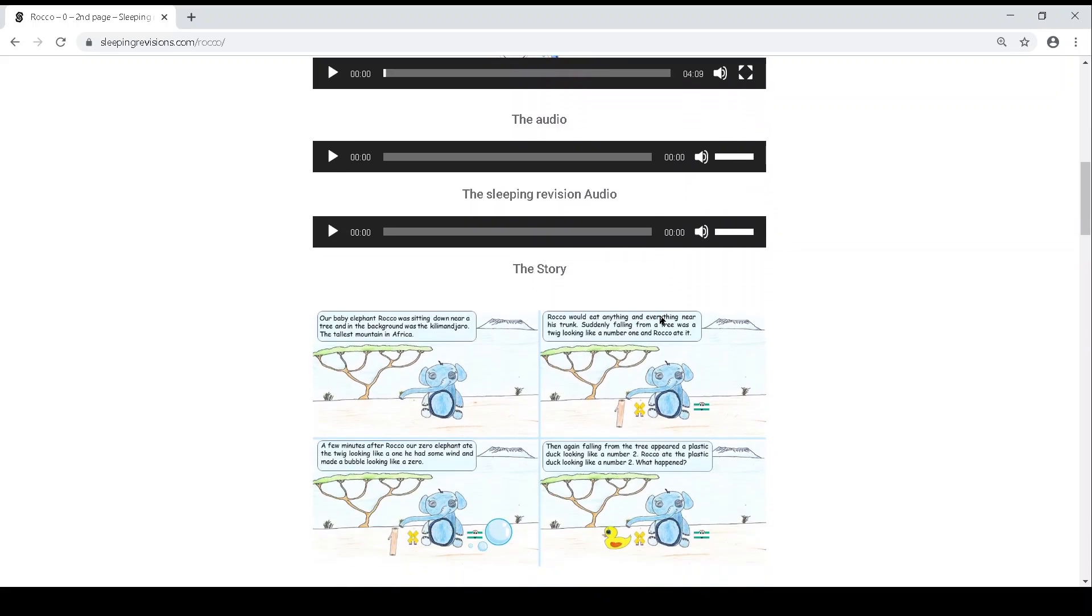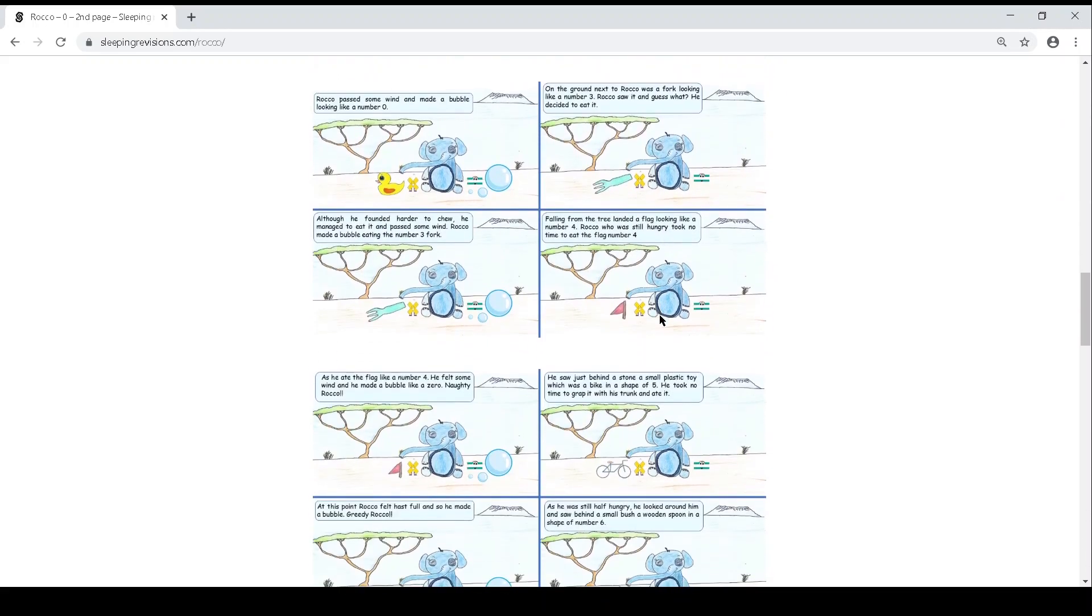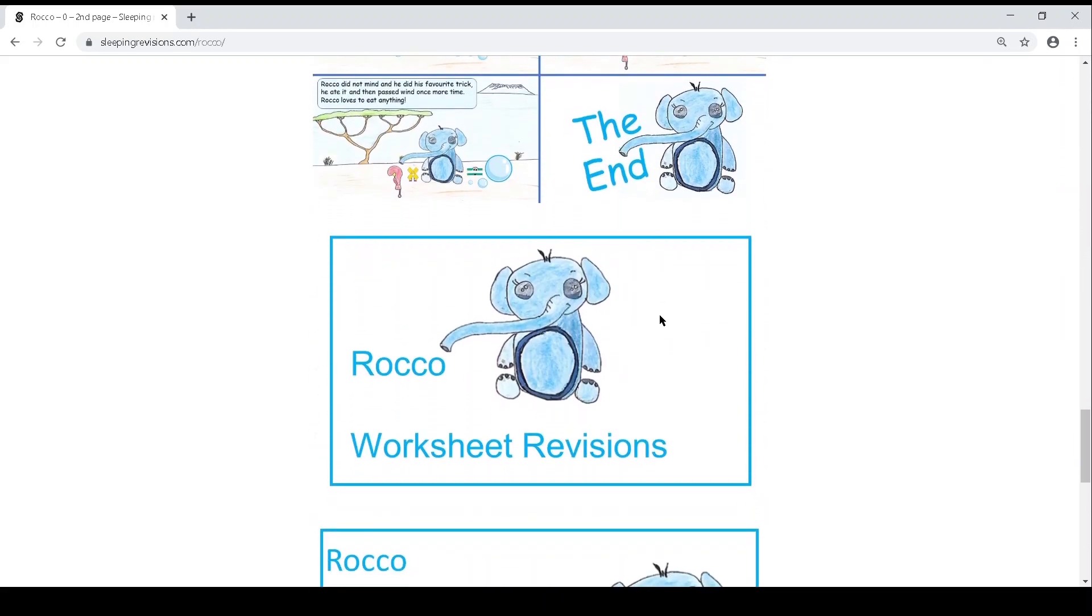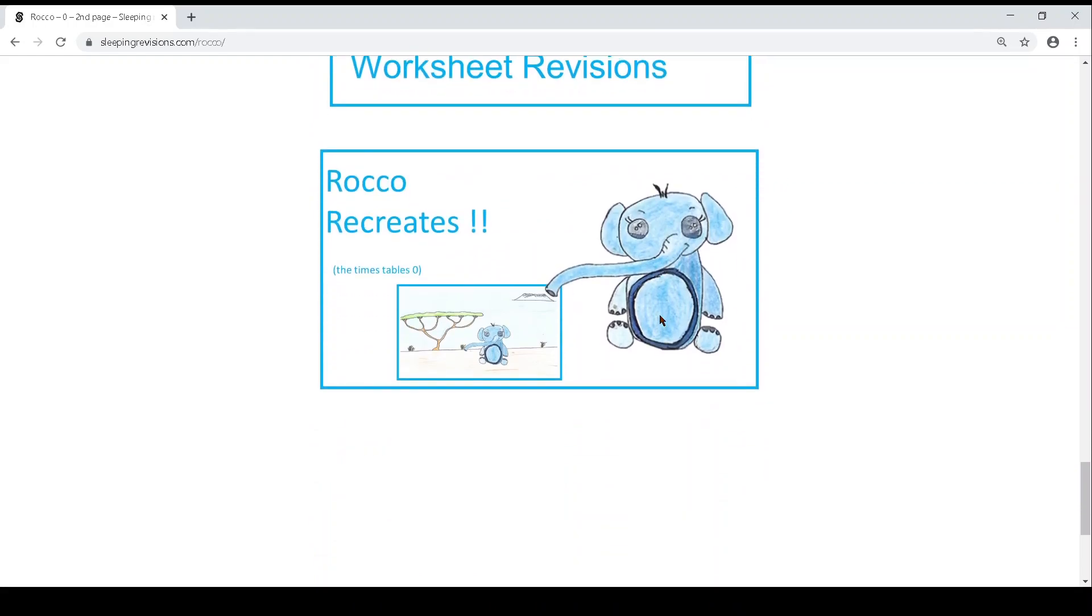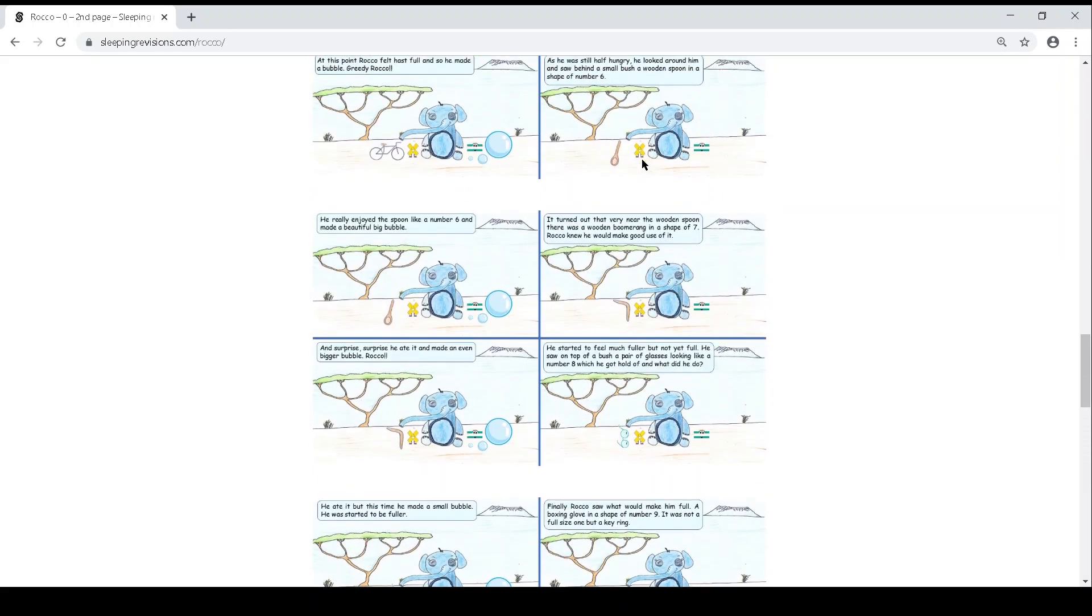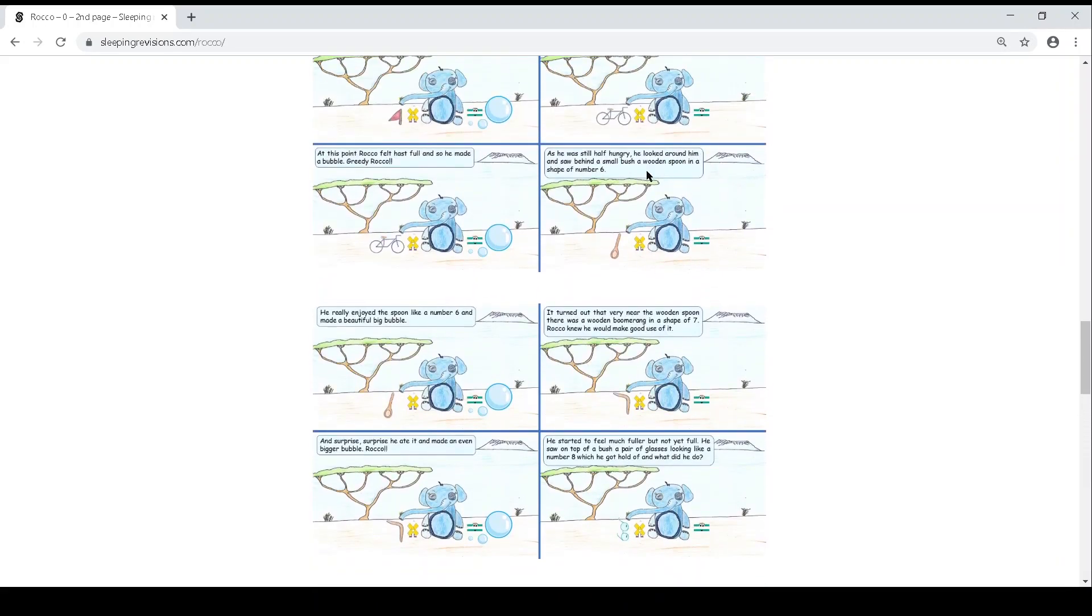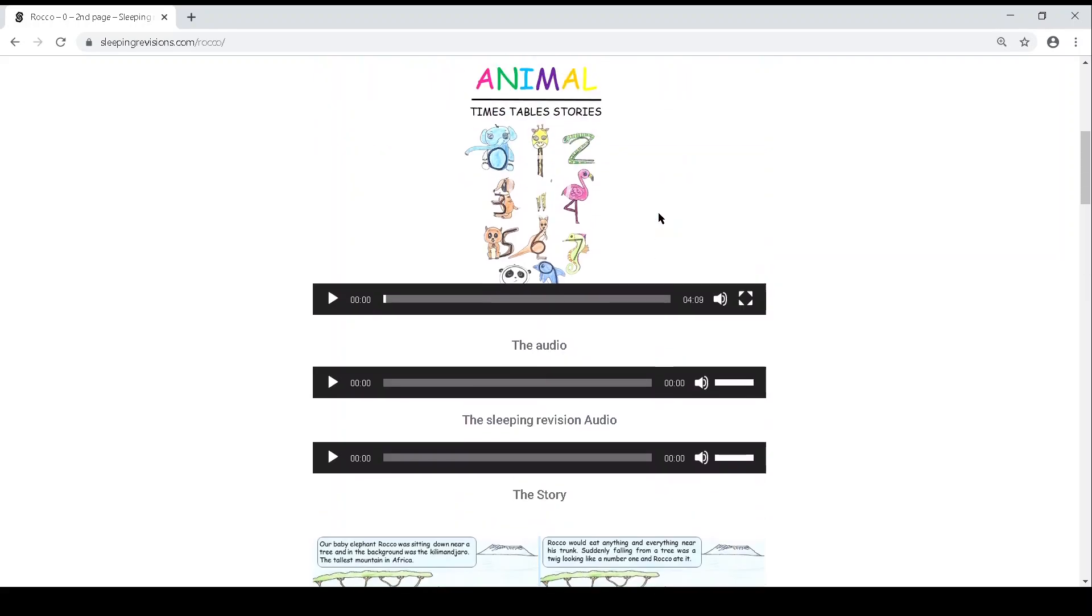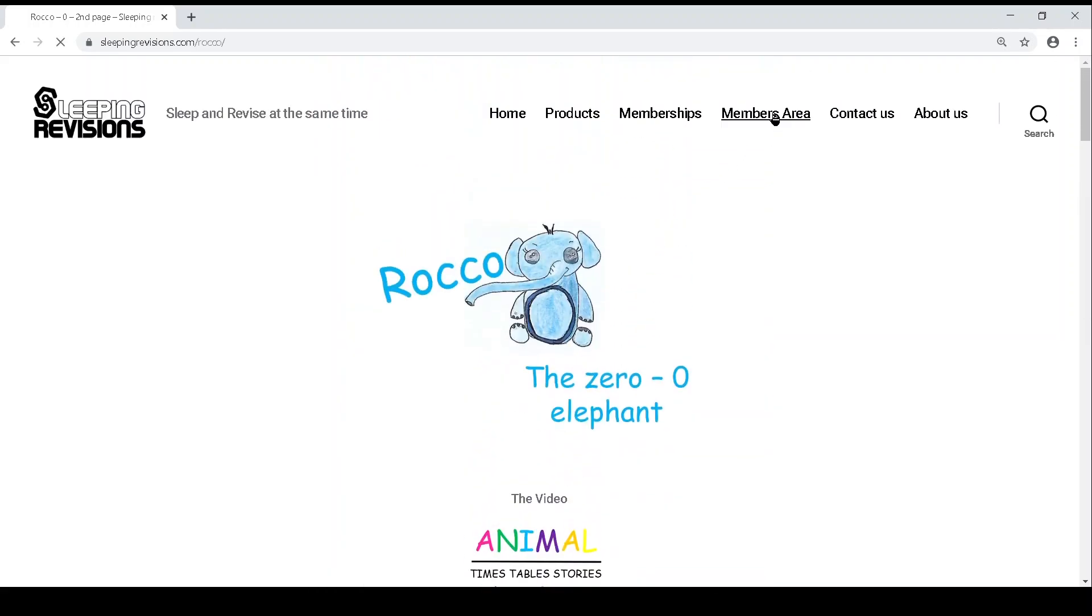With the Rocco recreates pack, you would have the background of the African one, and then with Rocco and all the different items. When you go back to the member area and select another timetable, you will have the same content.